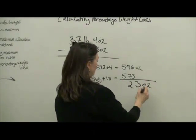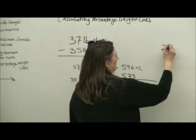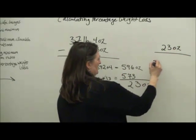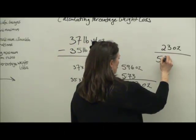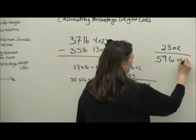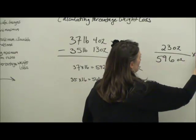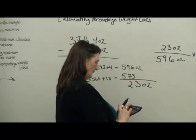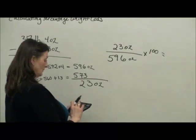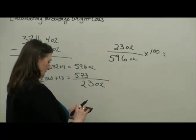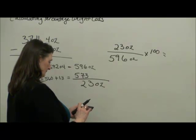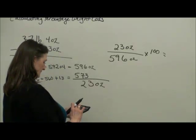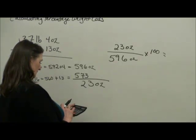We take what has been lost, 23 ounces, over his pre-illness weight, 596 ounces, times 100. So 23 divided by 596 times 100.